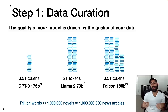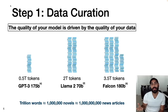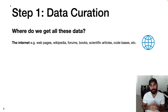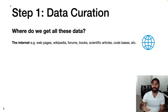Going through a trillion words of text and ensuring data quality is a tremendous undertaking. A natural question is: where do we even get all this text? The most common place is the internet, which consists of web pages, Wikipedia, forums, books, scientific articles, code bases, and more.